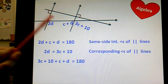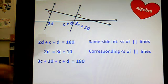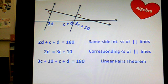There's the third one on there. 3c plus 10, plus the c plus d, add it to 180 because you have linear pairs. Working through that is sort of up to you how you attack that.